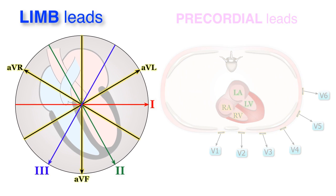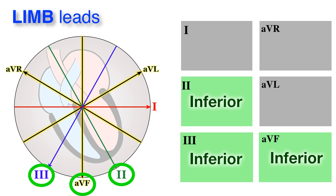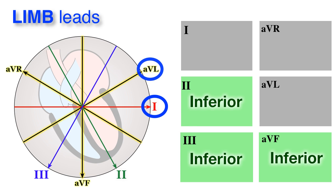For example, if you remember this diagram formed from the limb leads, you can see that leads 2, 3, and AVF are all recording from the bottom of the heart. These three leads together are called the inferior leads because they look at the inferior portion of the heart. Continuing with this diagram, leads 1 and AVL, which are neighbors, are located laterally.